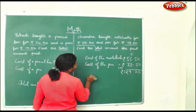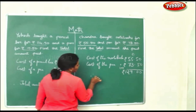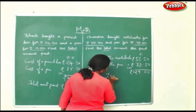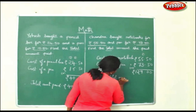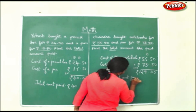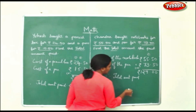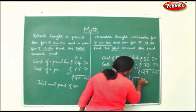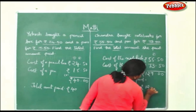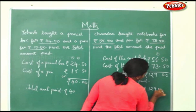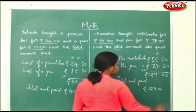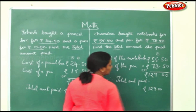Rupees. Therefore, total amount paid. You can either write the full notation or just write 129.